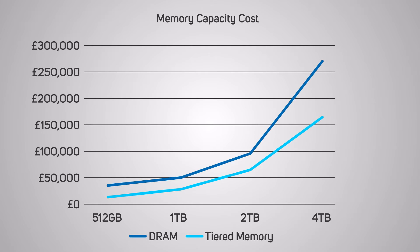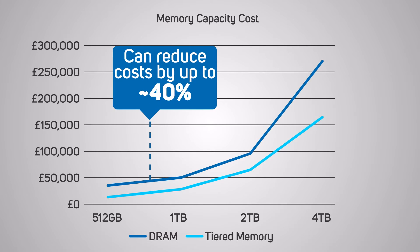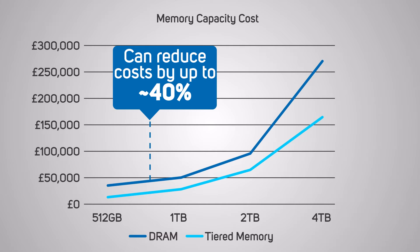Scaling in this way not only delivers greater capacity and performance when using larger datasets, but also leads to up to a 40 percent reduction in memory costs as you scale, as the cost per gigabyte of Optane is much lower than DRAM.